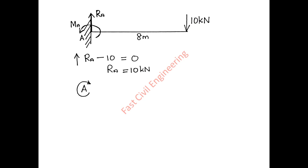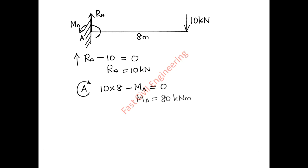Summation of moments about A equals zero. The 10 kN load at 8 meters gives 10 into 8, which is clockwise, so positive. This is a fixed support, which provides an external support moment MA. The support moment MA acts anticlockwise, therefore minus MA equals zero. Solving, MA equals 80 kN·m.